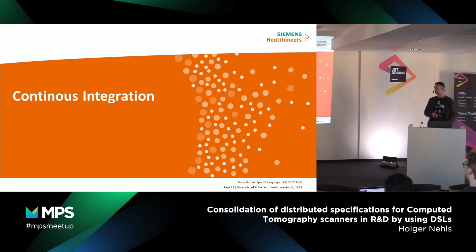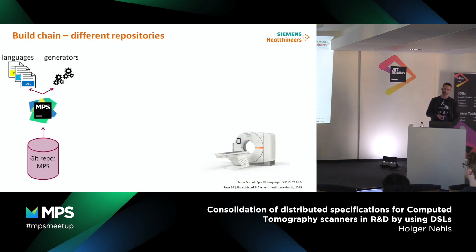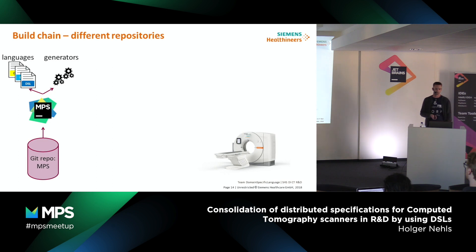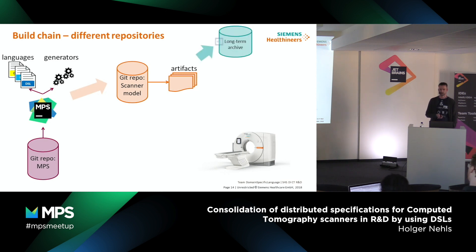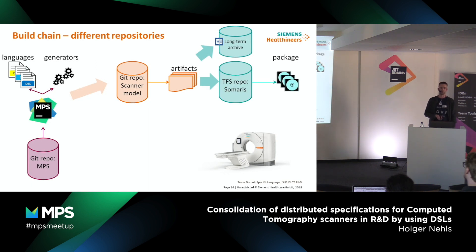When we talk about the entire development process, we also have to think about continuous integration, and therefore we implemented a build chain. We have different repositories: one for language development where we implement our languages with all their aspects as well as the generators. This is then the base for the scanner model instances, which are persisted on a separate Git repository. From this we can create artifacts: Word documents for the long-term archive, software input, or finally code for our Zomaris software, which is packaged and installed on the system.